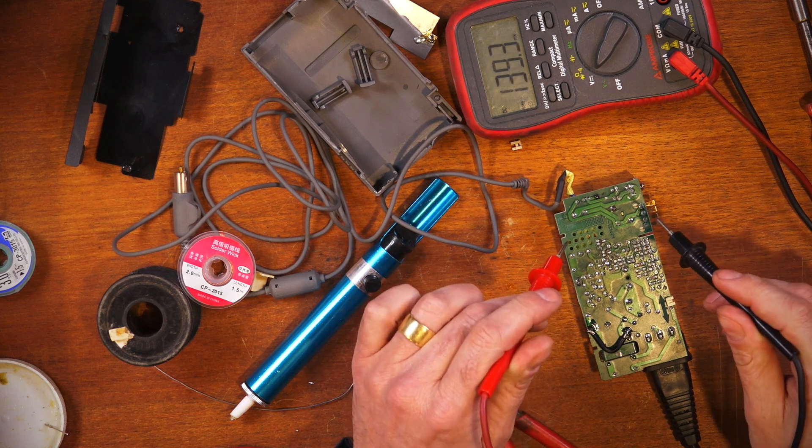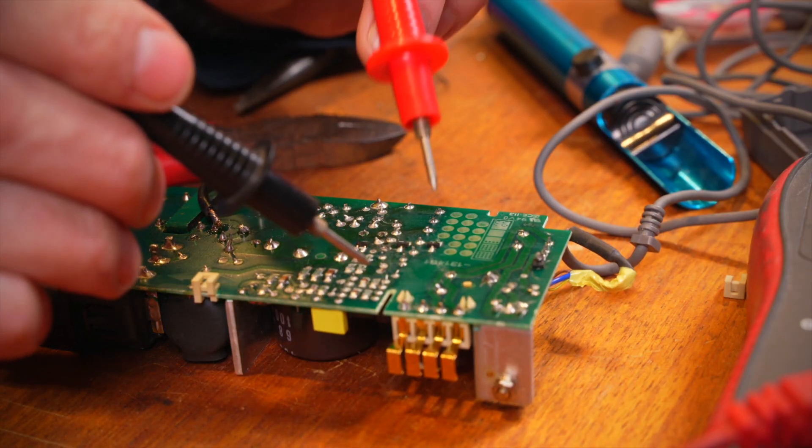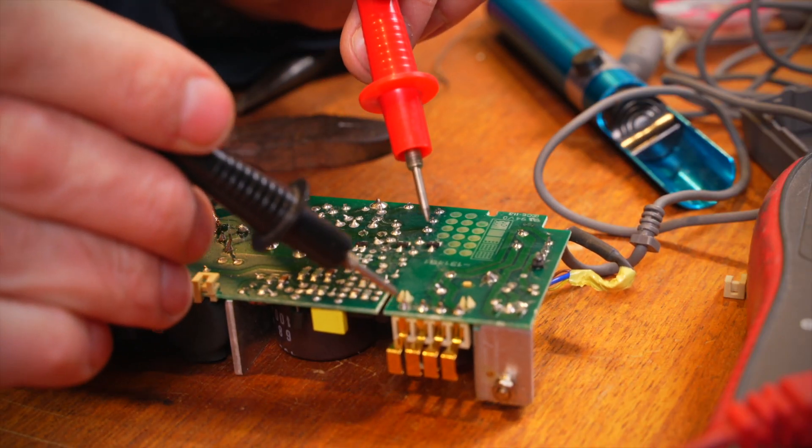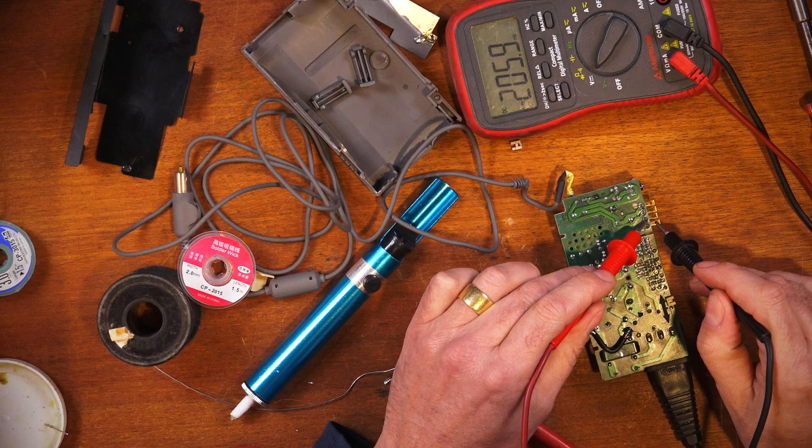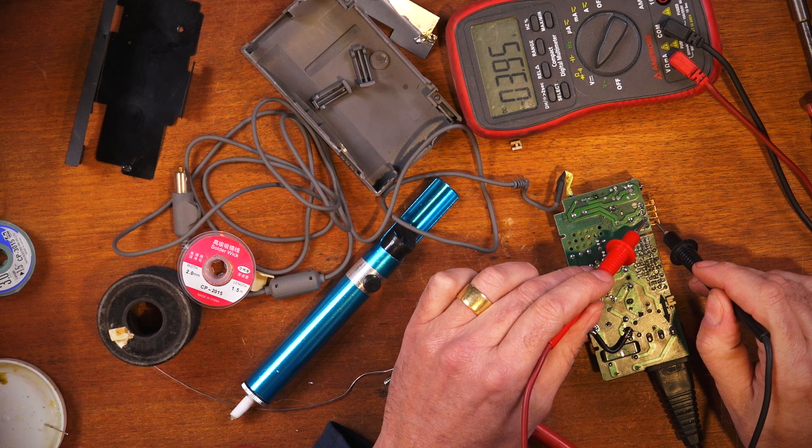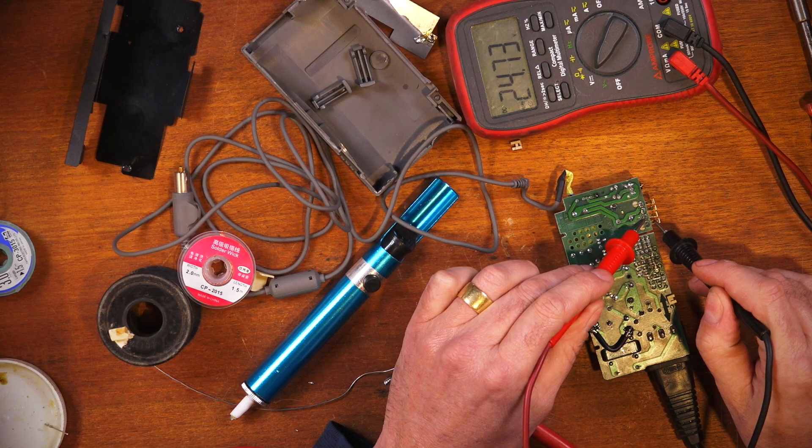So now all we have to do is test our 24 volt side down here which is this pin I think is the earth, this terminal here and this one here is, oh look at that 24 volts. So now I'm confident that this thing is outputting 24 volts again to the barrel plug.